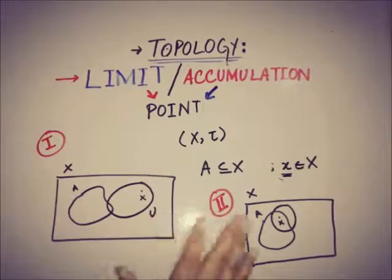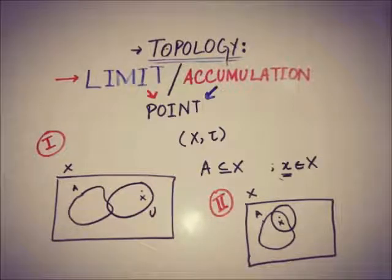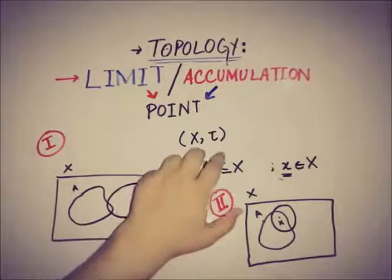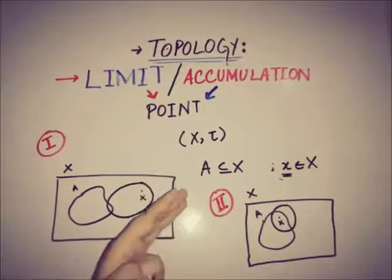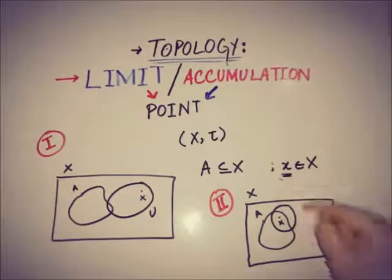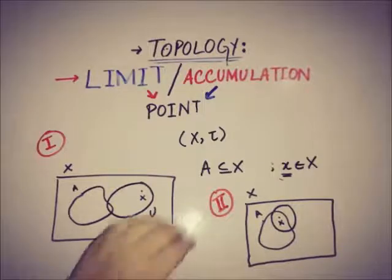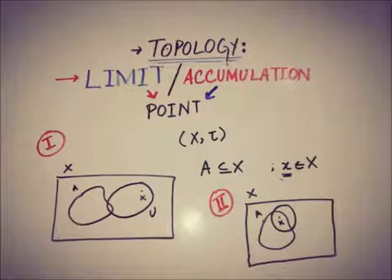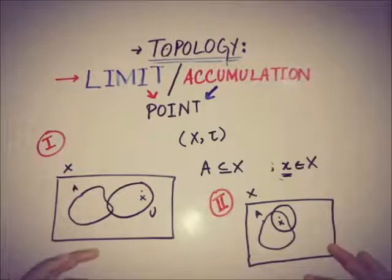Whether x is outside of A or x is in A, every open neighborhood of x must intersect with A at some point other than x itself. So combining everything: given a topological space (X, τ), A any subset of X, and x any point from X, then x is said to be a limit or accumulation point of A if every possible open neighborhood of x intersects with A at a point other than x.